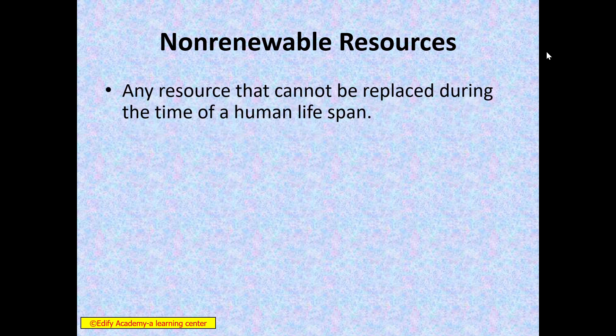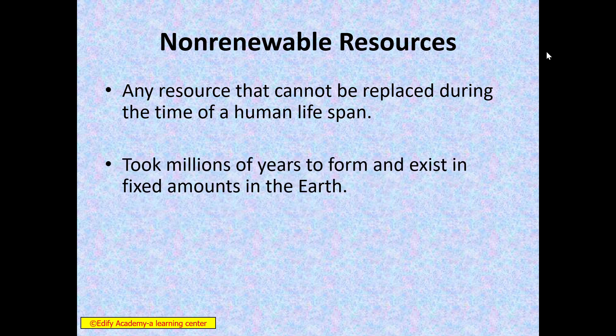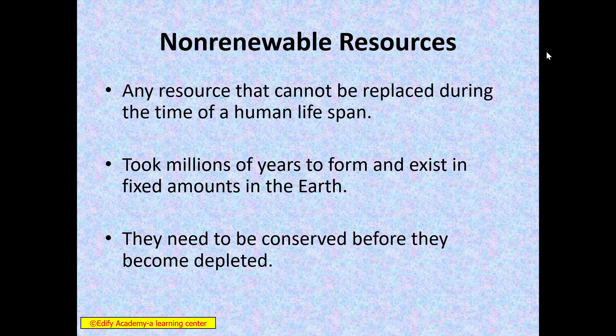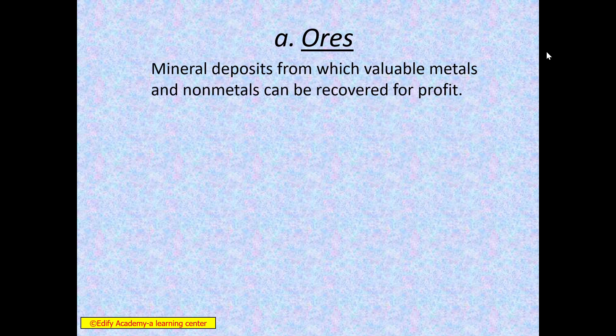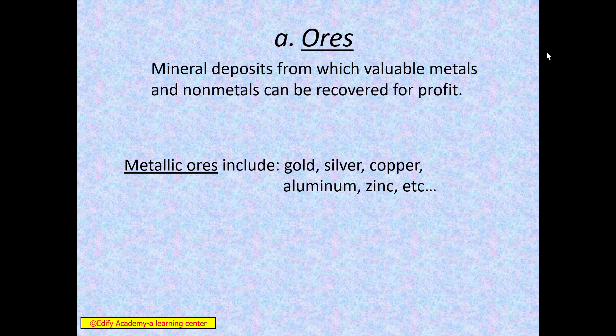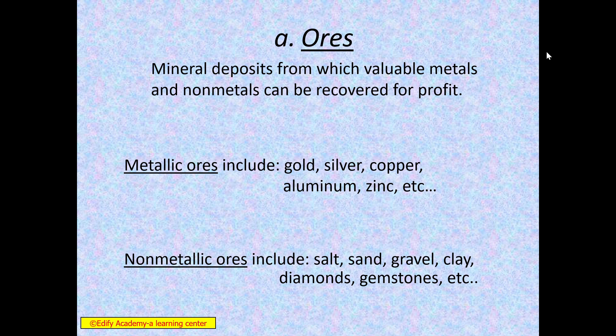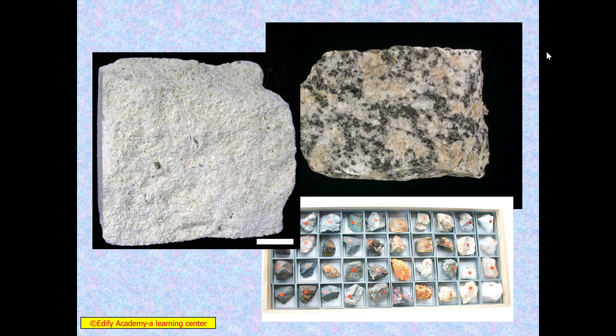Next is non-renewable resources — the resources which are mostly used. Non-renewable means they cannot be renewed. Any source that cannot be replaced within a human lifespan of around 100 years. They took millions of years to form and exist in fixed amounts on earth. They need to be conserved before they become depleted. Like ores: mineral deposits from which valuable metals and non-metals can be recovered. Metal ores include gold, silver, copper, aluminium, zinc, etc. Non-metallic ores include salt, sand, gravel, clay, diamond, gemstones, etc.